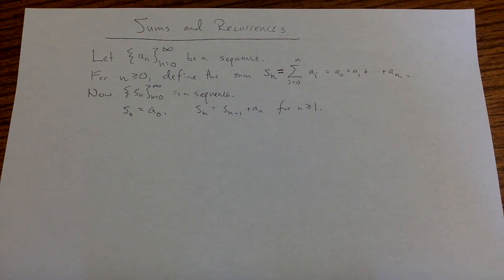I can define my first term to be the first term of my original sequence. Then, going from the (n-1)th to nth term of my sum sequence, I just take my (n-1)th sum and add the nth term of my sequence. So I can define these partial sums using sum notation or using this recurrence relation.